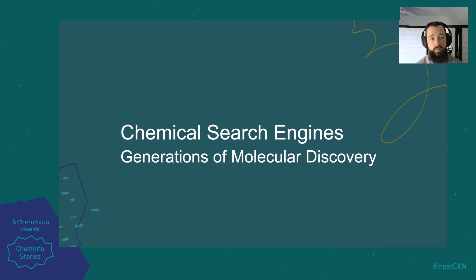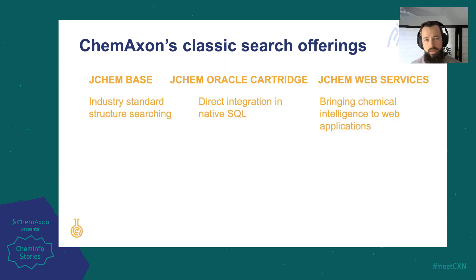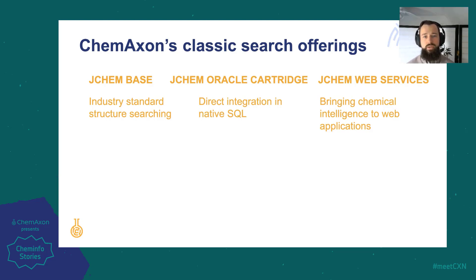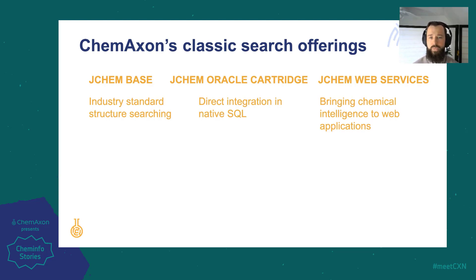I'd now like to move on to the chemical search engines, which provide the real backbone of many of the ChemAxon tools. These are often known as the JChem family, and JChemBase provides the starting point for anybody looking to integrate chemical handling and database searching in their workflow. Its rich Java API integrates ChemAxon offerings such as calculators, extensive structure representation, and querying processing across a myriad of database formats.